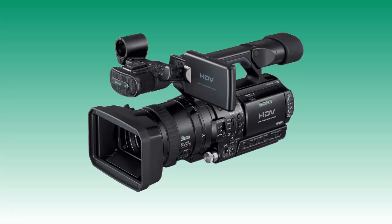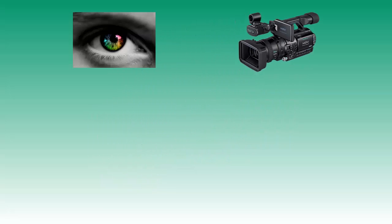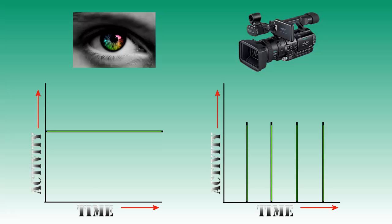To comprehend this effect you need some information about how a video camera works. A video camera does not record a continuous stream of data like our eyes, but rather a stack of photographs, and when these photographs are close enough together our brain fills in the blanks. So we think we see a continuous stream of data but in fact we're just seeing different images.